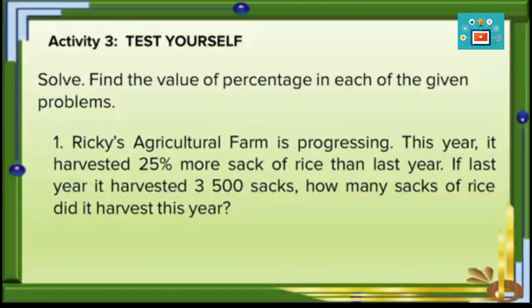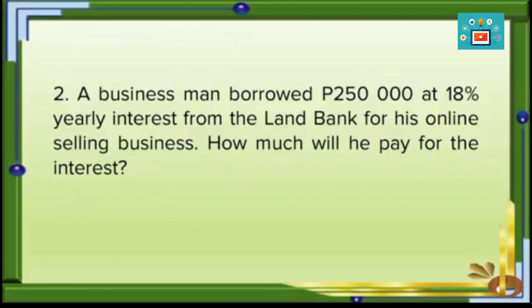Activity 3 — Test Yourself. Solve for the percentage in each problem. Problem 1: Ricky's agricultural farm harvested 25% more sacks of rice than last year. If last year it harvested 3,500 sacks, how many sacks did it harvest this year? Problem 2: a businessman borrowed 250,000 pesos at 8% yearly interest from a land bank for his online selling business. How much will he pay for the interest? Remember: percentage equals base times rate.